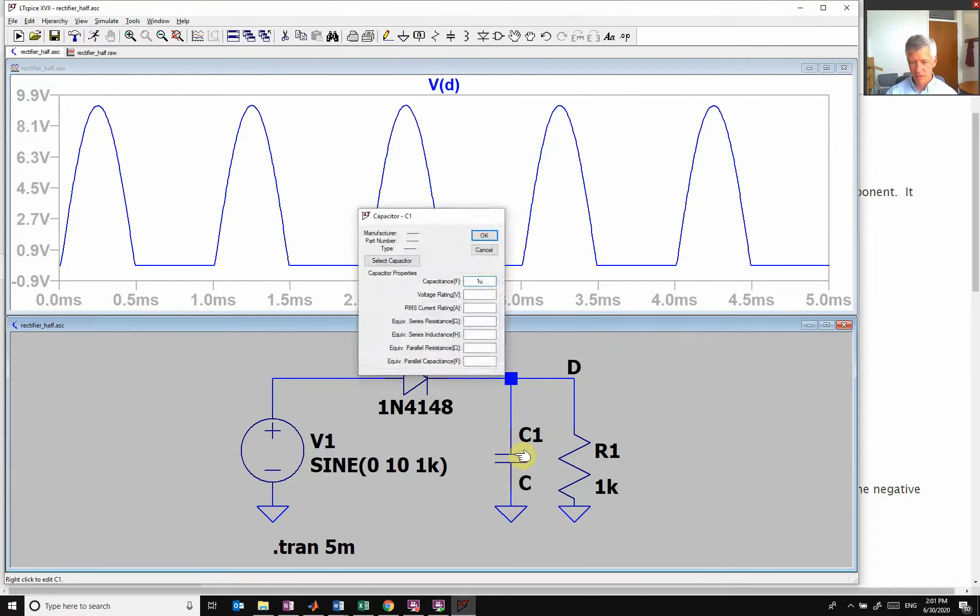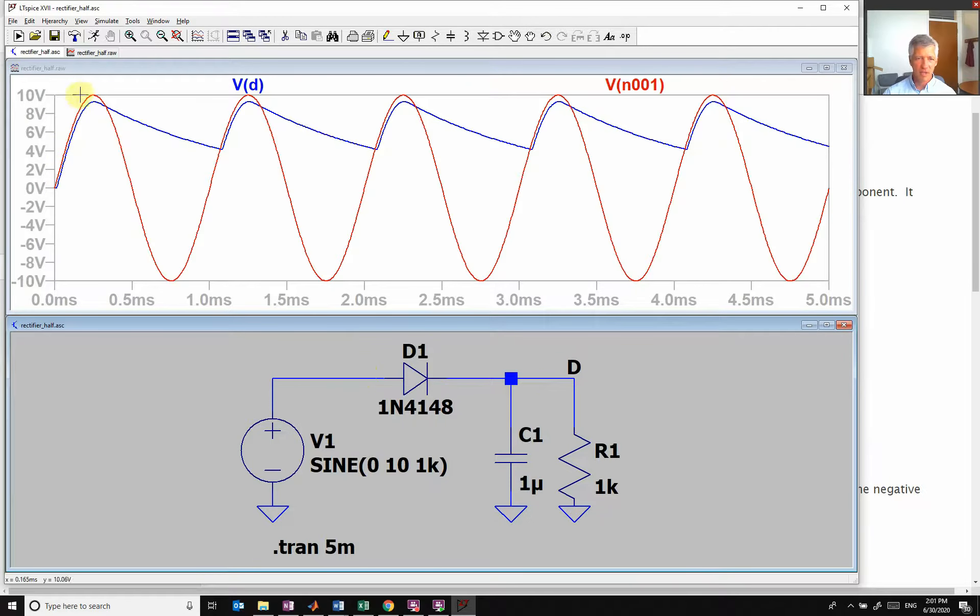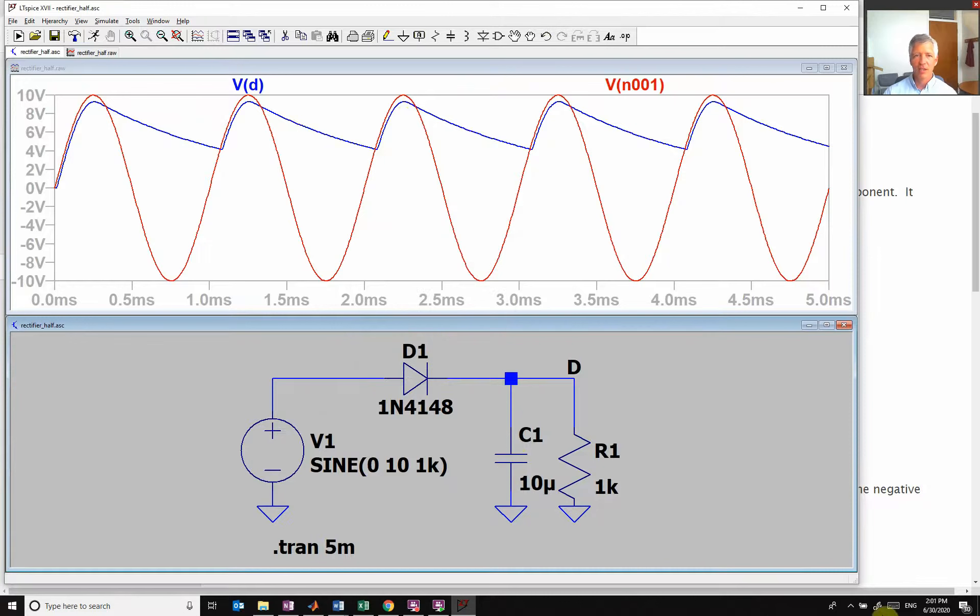So let's just put in a micro. So now what we see is that when we go down, it's charging up. And then when it starts to go negative, the capacitor discharges and then it charges up, discharges, charges up. And so that's how it filters it off. And the bigger you make the capacitor, the slower it discharges. And so it starts to look like a nice flat signal. So that is our rectifier.